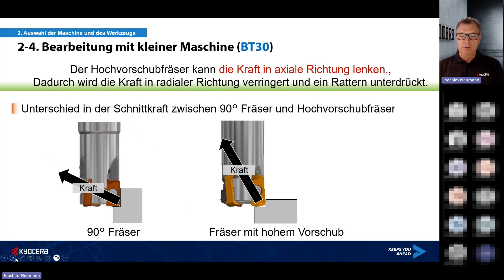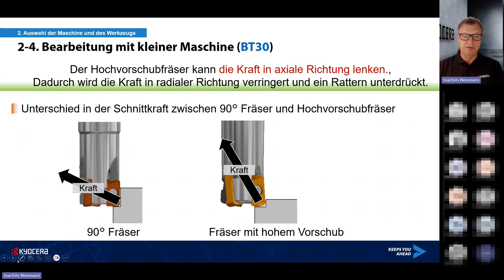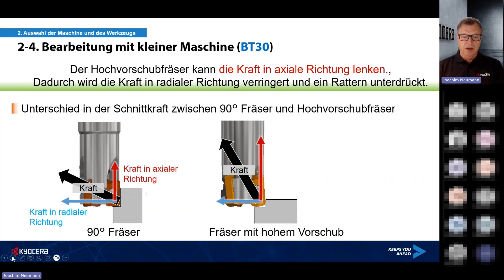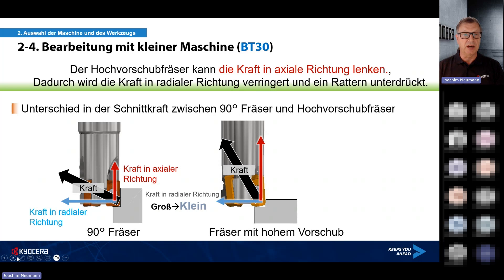Warum ist der Hochvorschubfräser für die BT30-Maschine die bessere Wahl? Beim Hochvorschubfräser werden die Schnittkräfte in axialer Richtung aufgenommen, wodurch Rattermarken und Vibrationen reduziert werden. In der Abbildung sieht man den Unterschied der Schnittkraftrichtungen zwischen 90-Grad-Fräser und Hochvorschubfräser: Mit dem schwarzen Pfeil erkennt man die Schnittkraftrichtung. Die Kräfte teilen sich in Radialkräfte (blau) und Axialkräfte (rot). Beim Hochvorschubfräser liegt die Hauptschnittkraftrichtung in Richtung Spindel – dadurch sind weniger Radialkräfte zu erwarten und weniger Rattermarken entstehen.